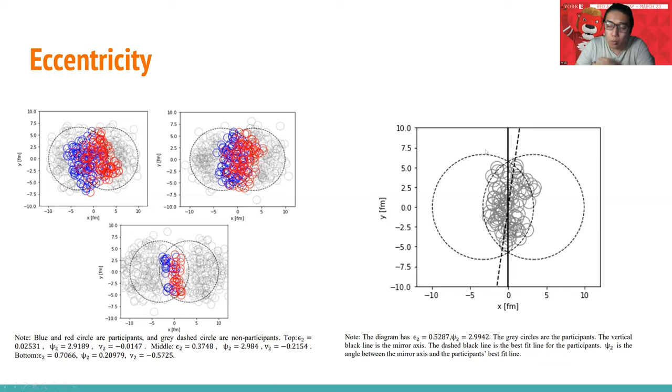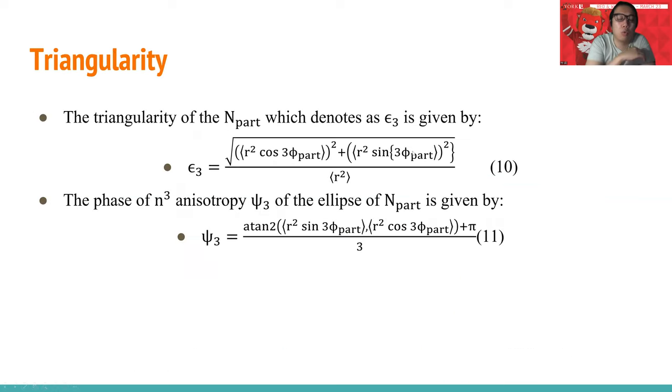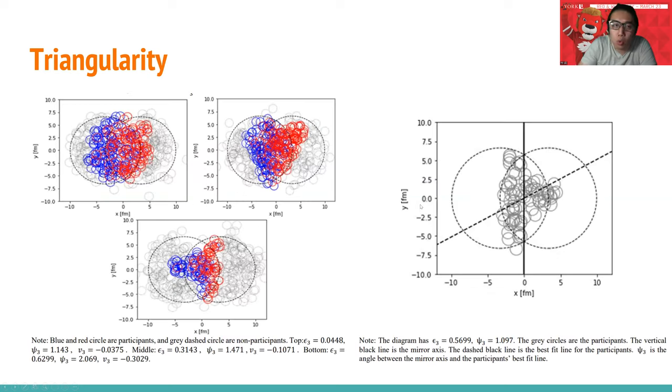Now we will also introduce what is triangularity. It will be a very similar idea compared with eccentricity. We have epsilon 3, which comes from this diagram. We can tell everyone can tell that as the triangularity increases, the shape is much more like a triangle. Yes, more like a triangle. Eccentricity looks like a bar or olive shape, but now it looks like a triangle.